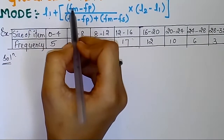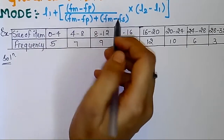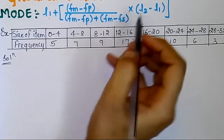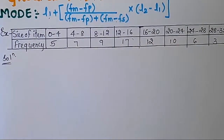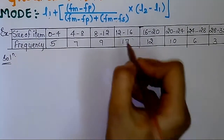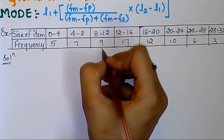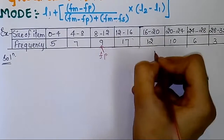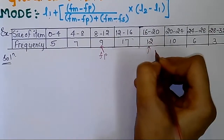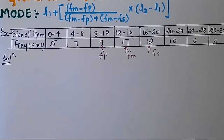Now we are going to see the solution from this given question. First of all we need to find which is the maximum frequency from the given data. The maximum frequency is 17, so 12 to 16 will be our modal class. fp means the preceding class of the modal class, fs means the succeeding class, and fm means the modal class possessing the maximum frequency.